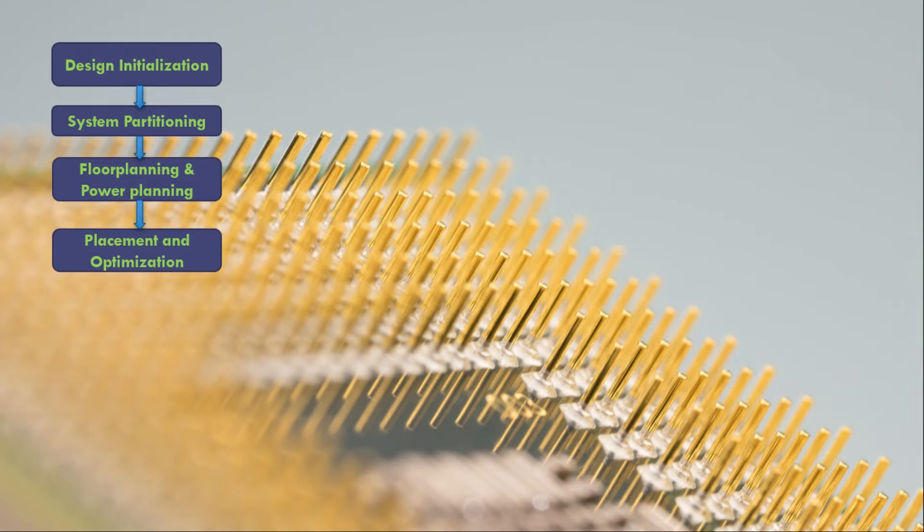During coarse placement, the tool will not recognize the standard cell rows where it has to sit properly. In the detailed placement, it will take care of all that. It will take care of the site where it has to sit properly. It will do legalization. That's called legalization. And several other optimizations also will be done such as placing buffers and other related stuff.